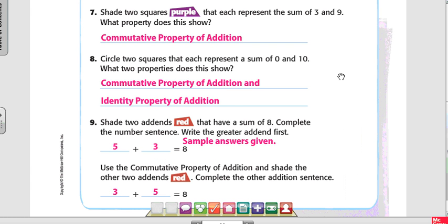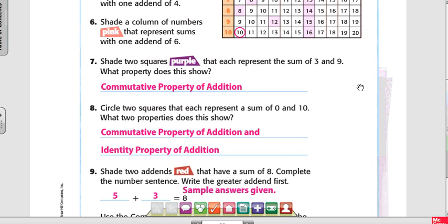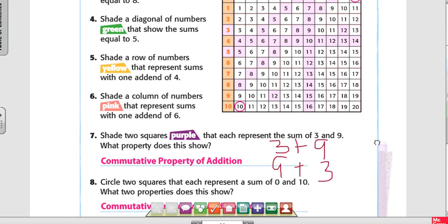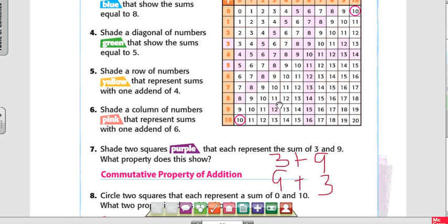It says shade two squares purple that represent the sum of three and nine. It says, what property does it show? Commutative property. What that means is three plus nine or nine plus three, which is 12.